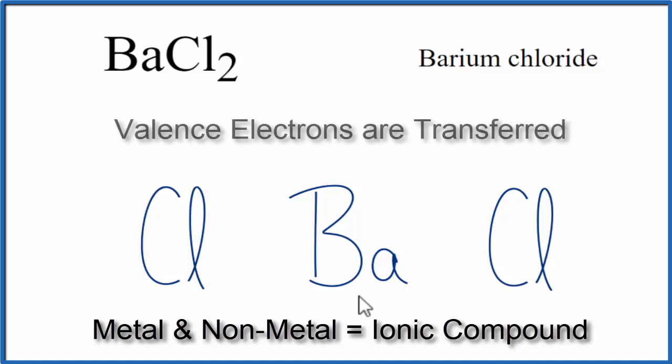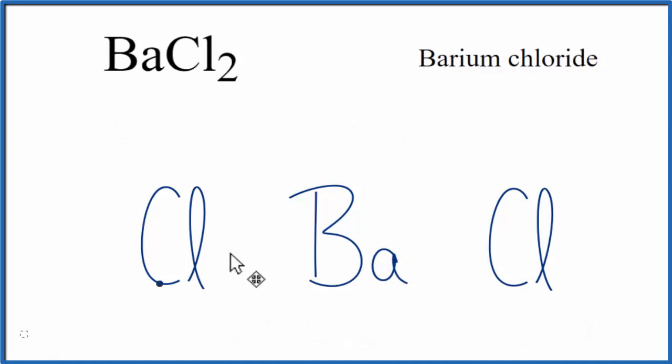In ionic compounds, valence electrons are transferred. So we go to the periodic table, and barium, that's in group 2, so it has 2 valence electrons. Chlorine, that's in group 17, sometimes called 7A, it has 7 valence electrons.